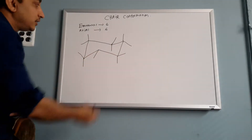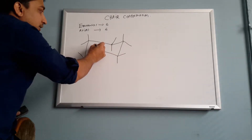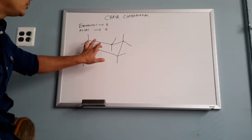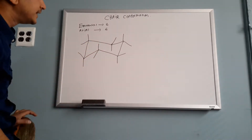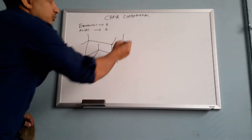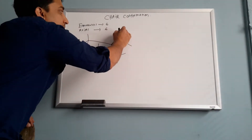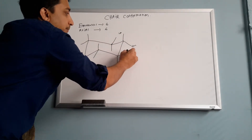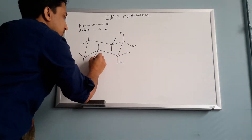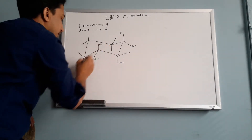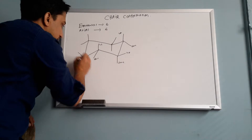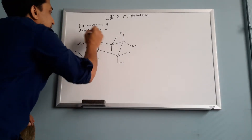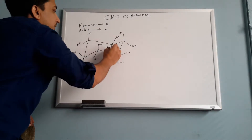So this two is axial, and the middle one is equatorial. This two is axial, and this middle one is equatorial. You also have to understand up and down. This is up, this is down, this is up, this is down — alternating around the ring for both axial and equatorial positions.